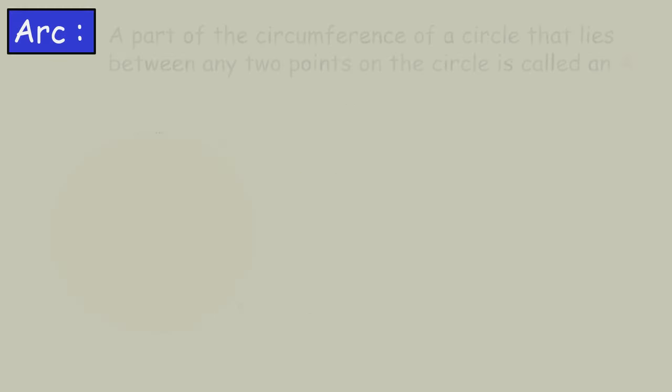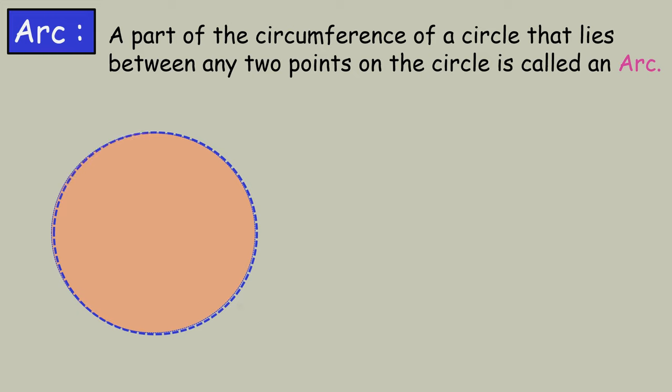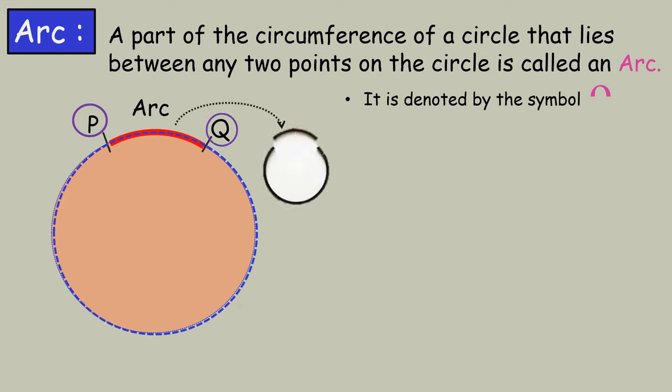Arc. A part of the circumference of a circle that lies between any two points on the circle is called an arc. It is denoted by the symbol. Here, points P and Q divide the circumference into two arcs.